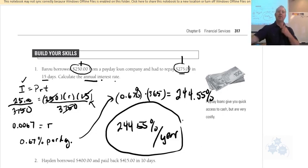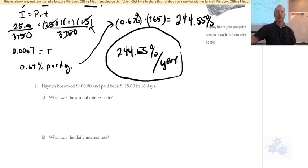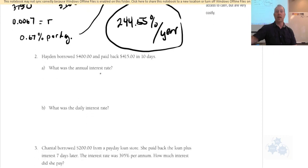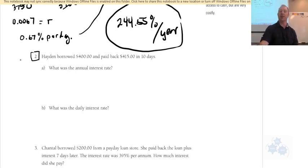If you didn't round and used the full repeating decimal, you'd get approximately 243%. Rounding is totally fine. Take a few minutes to do question 2 on your own and I'll show you the answer shortly.